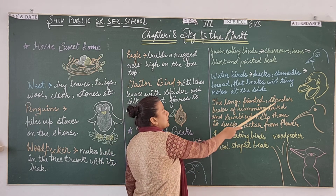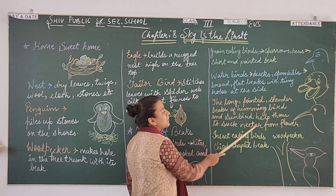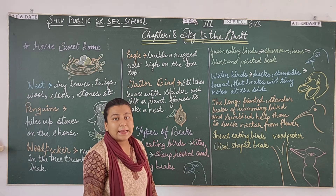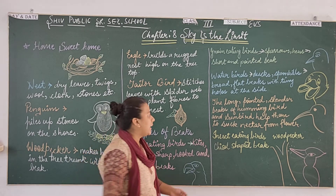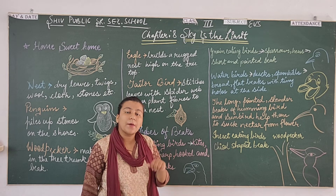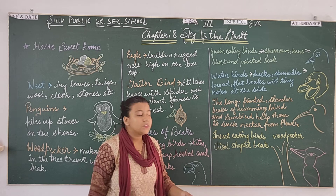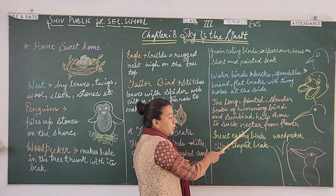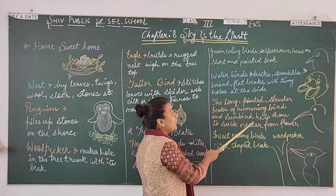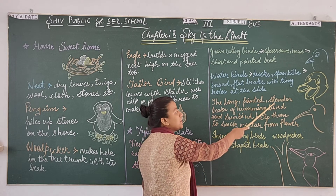Hummingbird and sunbird use their beaks to suck nectar from flowers. Nectar is a sweet juice which is present in flowers. These birds have long beaks to reach the nectar.